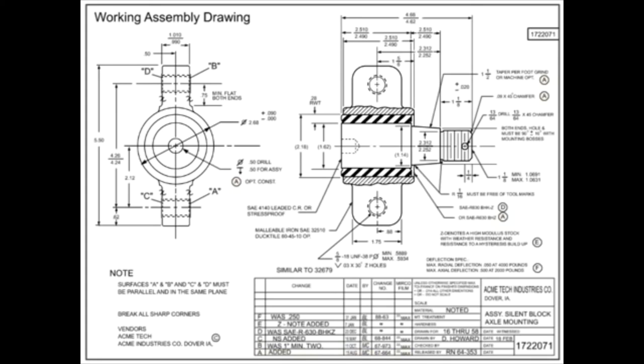Working assembly drawings are ideal for smaller, simpler assemblies. Since they combine both detail and assembly characteristics, they can become complex very quickly.